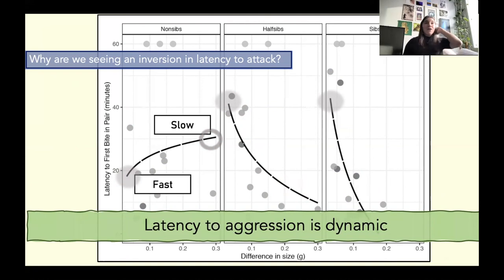So why is there an inversion in latency to attack between siblings and non-siblings and size differences within each pair? I am not entirely sure right now. It's something I really hope to find out later in my thesis, but what we can say is that latency to aggression is dynamic, and there's something going on here with tadpoles assessing each other, which is shaping this initial aggressive behavior.